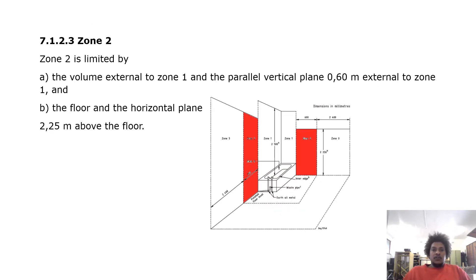Zone 2 is limited by the volume external to zone 1 and the parallel vertical plane 0.6 meter external to zone 1, and the floor and horizontal plane 2.25 meters above the floor. So it is basically next to zone 1, from the floor up to 2.25 meters. Zone 1 stretches a bit further as it is 2.5 meters above the ground, whereas zone 2 has a height of 2.25 meters above the floor.